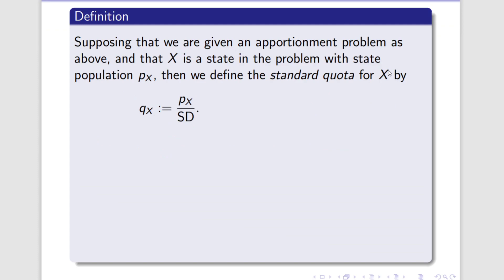Once we have the standard divisor, we look at every single one of the states individually and calculate something called the standard quota. The standard quota for state X is found by taking X's state population PX and dividing it by the standard divisor. Much like the standard divisor was the ideal number of people per seat, the standard quota represents the ideal number of seats a state should be getting. Unfortunately, the standard quota very rarely is what we actually end up giving to a state — most of the time those numbers end up being very weird.